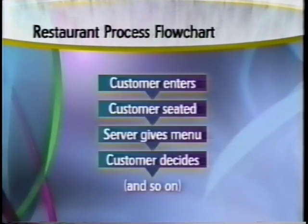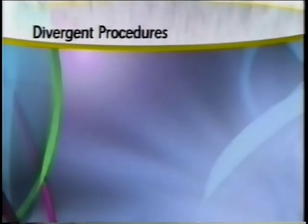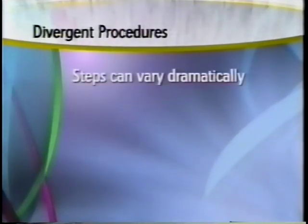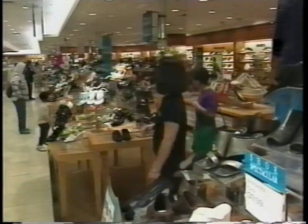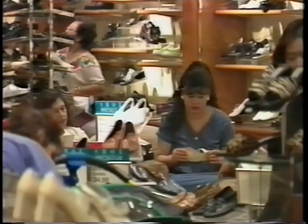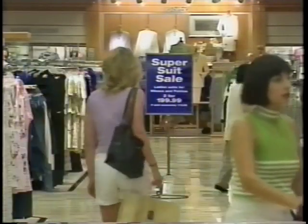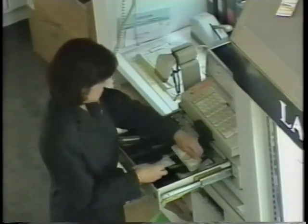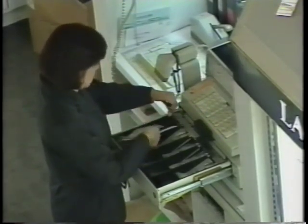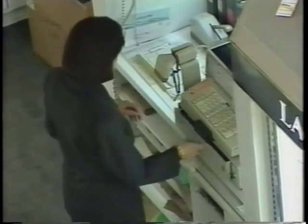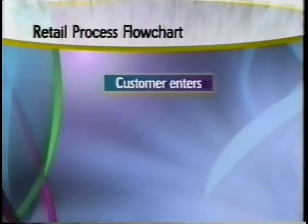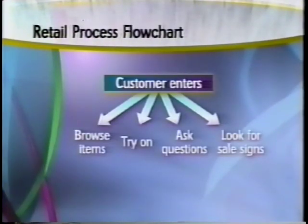In other cases, the process can be quite flexible. Here, the procedures can be divergent — meaning that the steps of the procedure can vary dramatically based upon the judgment of employees or customers. For example, in retailing, the process steps are determined by customers. They can choose to shop for shoes first, then clothing. The only thing standard from one customer to the next is that they all enter and they all pay before leaving with purchases. Everything else is up to the customer. Such loosely defined, self-serve processes can be difficult to describe with a flowchart.